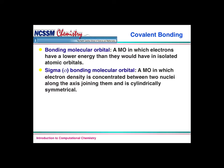A bonding molecular orbital is a molecular orbital in which electrons have a lower energy than they would have in isolated atomic orbitals. The two individual 1s orbitals of hydrogen have high energy — if we overlap them, they will now have a lower energy, which is a good thing and forms a bond. A sigma bonding molecular orbital is an MO in which the electron density is concentrated between two nuclei along the axis joining them and is cylindrically symmetrical. You saw several examples of sigma bonding in the Electron Density Lab — what you were looking at between the two carbon atoms was the sigma bonding between them.